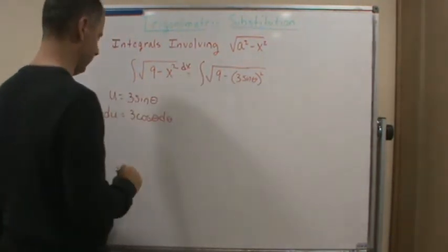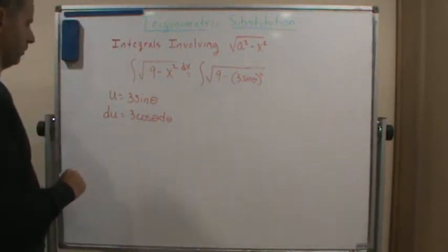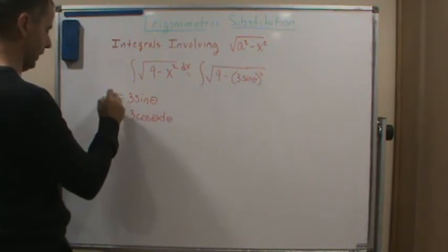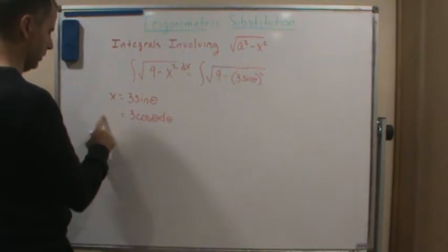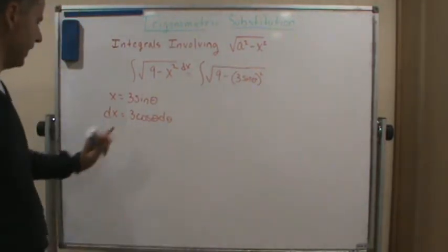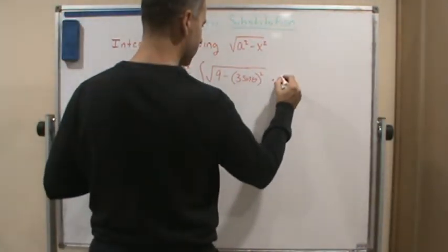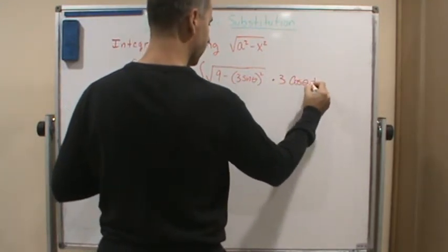Oh, hold on, DX here. So then my DX is this, right? So all I'm going to do is substitute in for DX, and then I'm going to put times 3 cosine theta d theta.